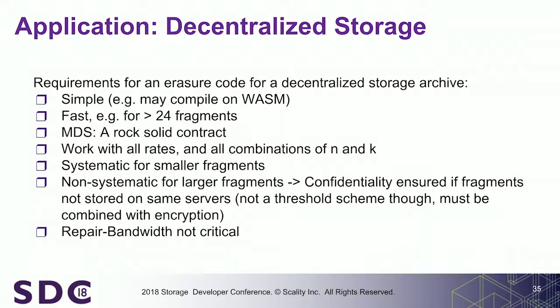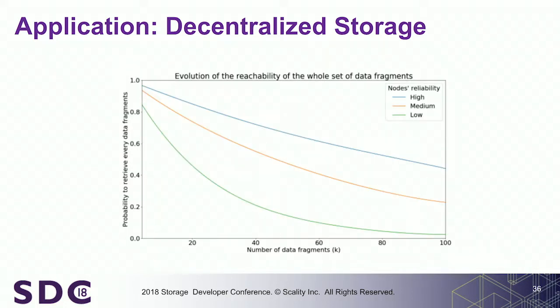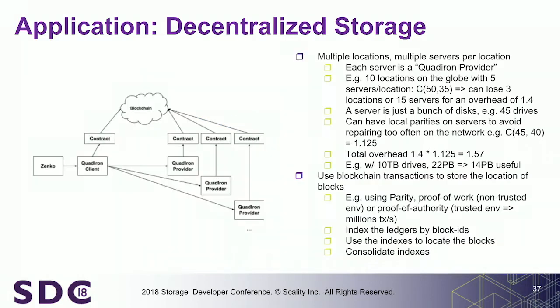We are sure that if you have K minus one fragments, you cannot decode — it's like a threshold scheme. With more fragments, the probability of reaching a fragment in clear decreases, so it's not that interesting to use systematic code. You also lose the confidentiality property, which is super interesting. It doesn't prevent you from encrypting, because you want to be sure nobody can decode, but it adds confidentiality overall.